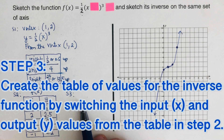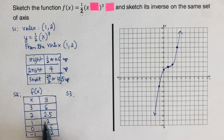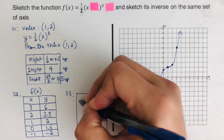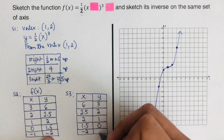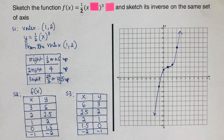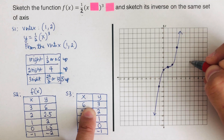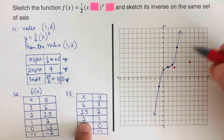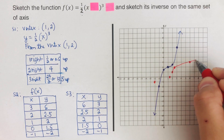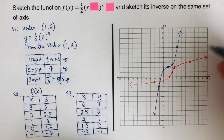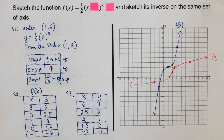Step 3: create the table of values for the inverse function by switching the input x and output y values from the table in Step 2. We switch the values around and sketch the graph starting with the first dot — (6, 3) goes up here. This gives us our inverse f⁻¹(x).